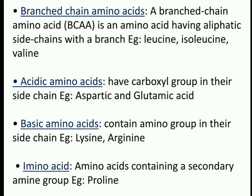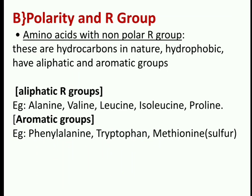Classification of amino acids on the basis of polarity and R group: amino acids with non-polar R groups are hydrophobic in nature and have aliphatic and aromatic groups. Amino acids with aliphatic R groups include alanine, valine, leucine, isoleucine, and proline. Amino acids with non-polar aromatic groups include phenylalanine, tryptophan, and methionine.